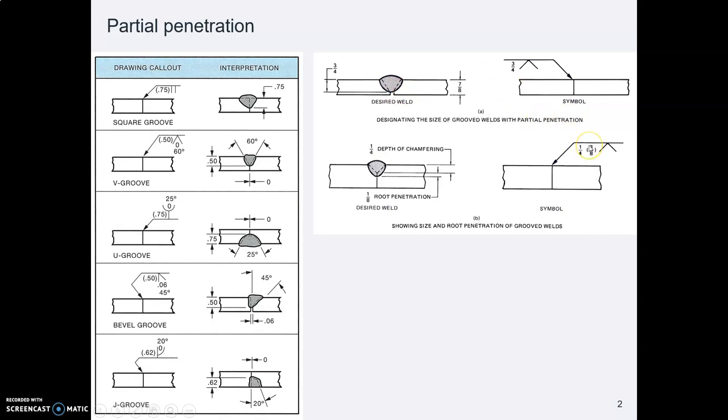If you look at these AWS examples, I think that's helpful. You can see on the right of this slide is AWS. You can see that the first number is the depth of the groove preparation. That's how deep they've cut that V. The second number in parentheses is the depth of the actual weld material.